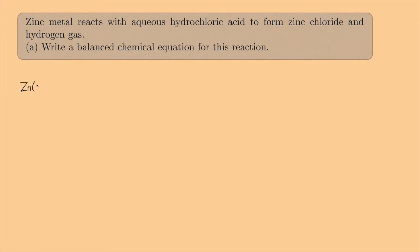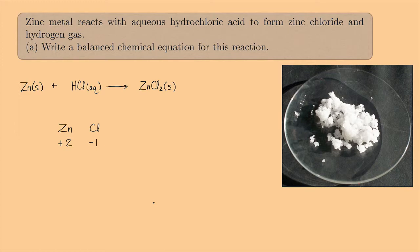So going back to our reaction: Zn(s) + HCl(aq) gives us zinc chloride. Since zinc is +2 and chlorine is −1, we need two chlorines, so this is ZnCl₂(s). Here's a picture of zinc chloride — it looks like crystals. We also have H₂(g). To balance, the zincs are already balanced; we have two chlorines on the right and one on the left, so we put a 2 in front of HCl. That takes care of both the chlorines and the hydrogens.